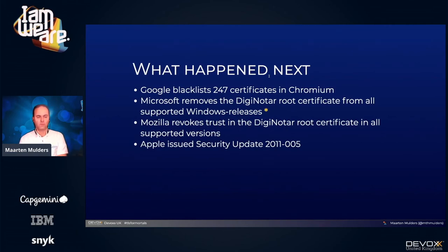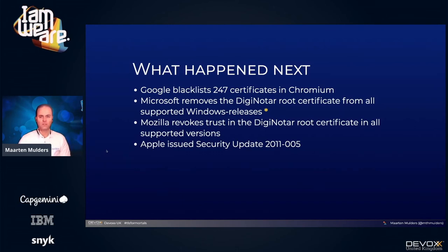In the days after the leak became public, Google quickly updated 247 certificates shipped with the Chromium browser to no longer trust them. Microsoft removed the DigiNotar root certificate from all supported Windows releases. Mozilla revoked trust in the DigiNotar root certificate in all versions of Firefox, Thunderbird, and other products. Apple issued security update 2011-005.